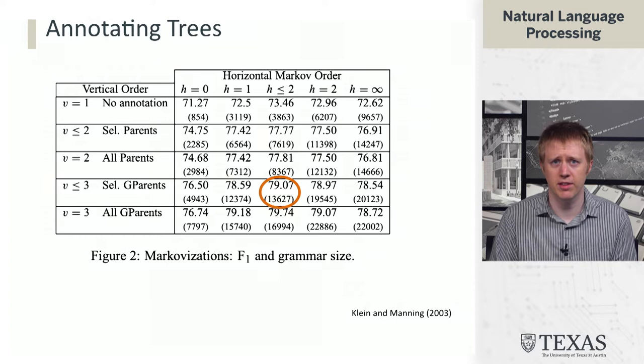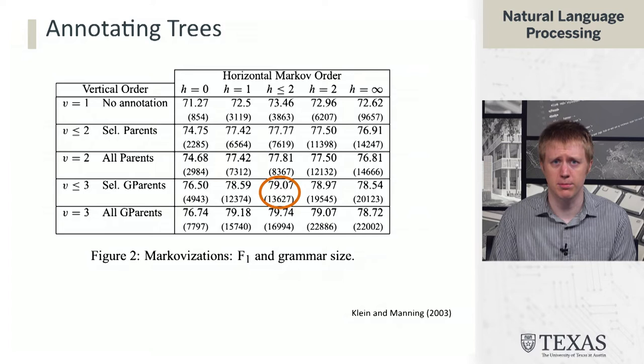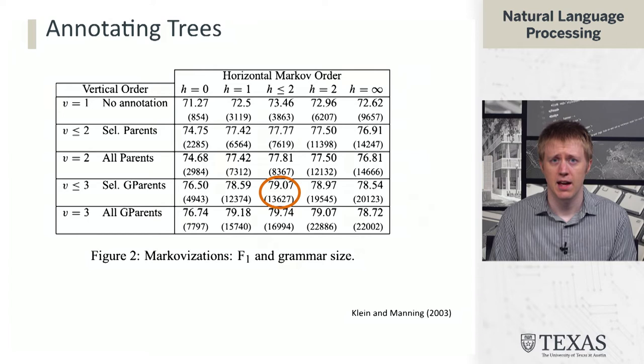This was investigated by Klein and Manning back in 2003. They found that a basic parser with V equals one and H equals zero can parse to around 70% accuracy, and you can increase that to almost 80% just through these Markovization tricks. This is pretty cool because it reflects a fairly simple transformation that can improve performance pretty substantially. We're going to contrast that with some more complicated approaches that improved performance earlier, which underscores why these simple transformations are sort of nice.